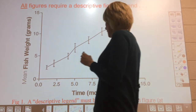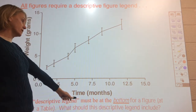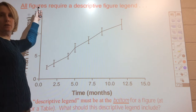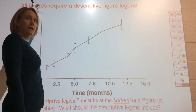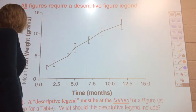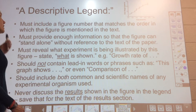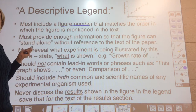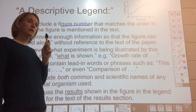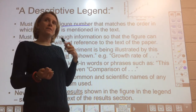A descriptive legend must be at the bottom for a figure; for a table, it goes on top. So your caption will be 'Figure 1' followed by your descriptive legend. The figure number must match the order in which the figure is mentioned in the text — this is important during editing. Never start with Figure 3 and then go back to Figure 1; always match the order figures are mentioned in the text.